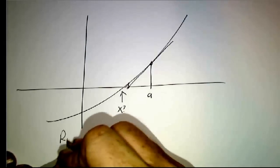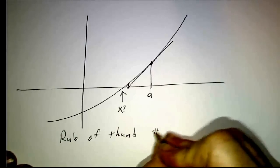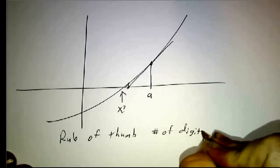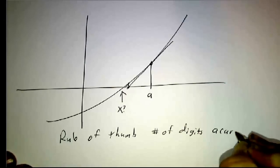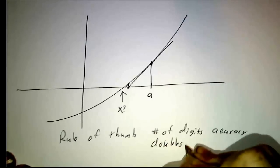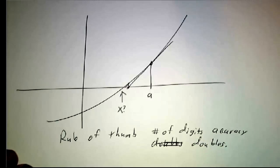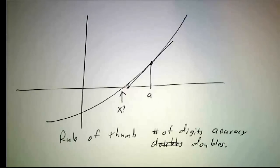Rule of thumb is number of digits accuracy doubles. So if you start off with something that's good to one-digit accuracy, you run it through the machine, you get something that's good to two-digit accuracy. Run it again, you've got four digits. Run it again, you've got eight digits. Run it again, you've got 16 digits. And suddenly, you're more accurate than the machine accuracy of your computer.